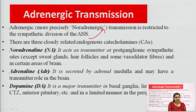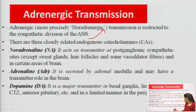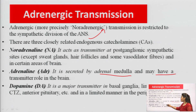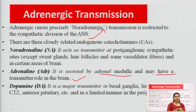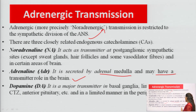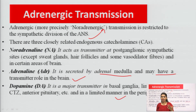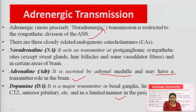Noradrenaline acts as a transmitter at post-ganglionic synaptic sites and target organs. Adrenaline is secreted by the adrenal medulla and may have a transmitter role in the brain. The third neurotransmitter, dopamine, is a major transmitter in the basal ganglia, limbic system, CTZ, anterior pituitary, and so on. These are the three major neurotransmitters of the sympathetic division.